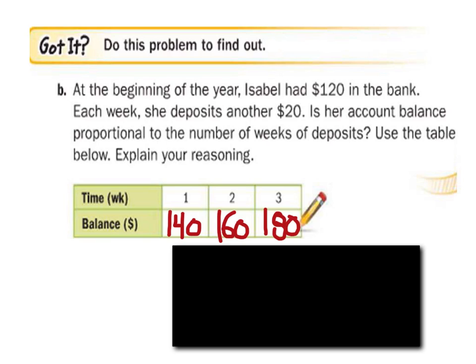So if you look at this, 1 over 140 is 1 over 140. 2 over 160 is 1 over 80. Are these equal? Nope, they're not. So this one, as it turns out, is not proportional.